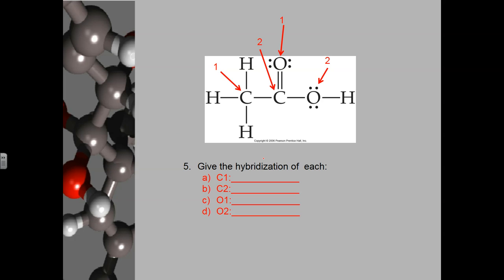In example five, an organic molecule is analyzed atom by atom. Carbon one has four electron domains — SP3 hybridized. Carbon two has three electron domains — SP2 hybridized. Oxygen one has a double bond and two lone pairs — three electron domains — SP2 hybridized. Oxygen two has two single bonds and two lone pairs — four electron domains — SP3 hybridized.